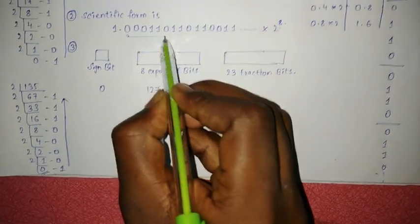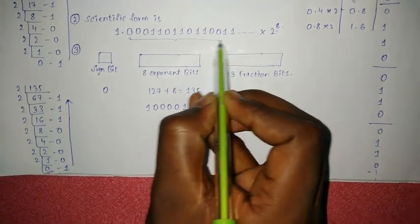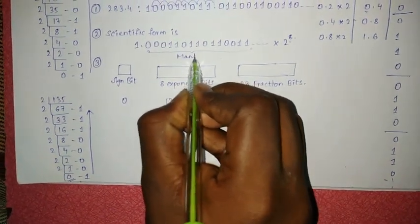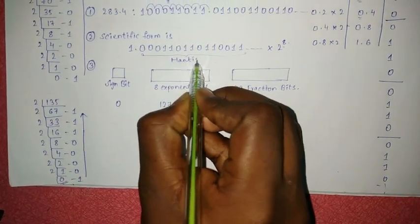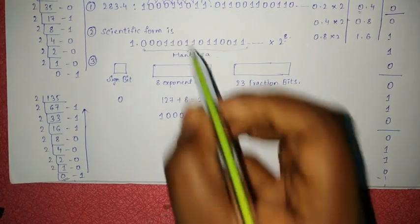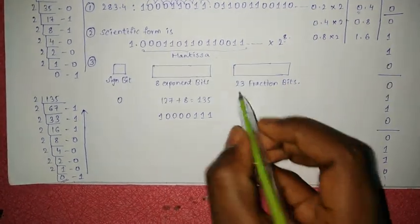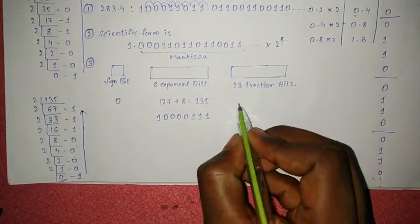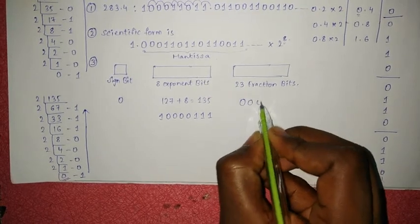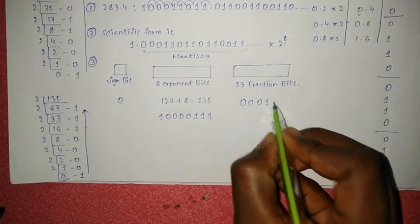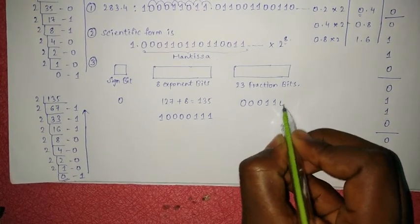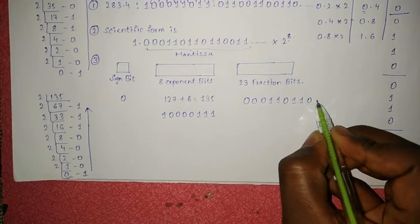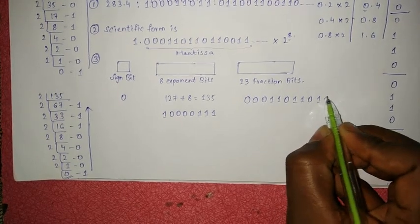Next, coming to the fraction bits — these are also known as the mantissa. In the scientific form, the mantissa is the part after the decimal point. We write this as 00011011 01100110...